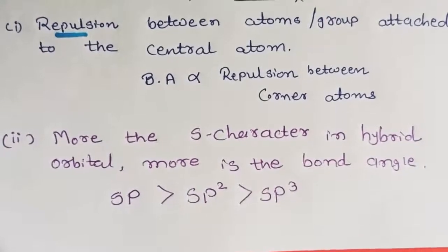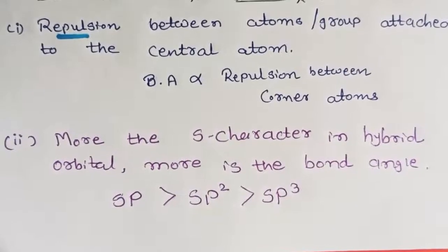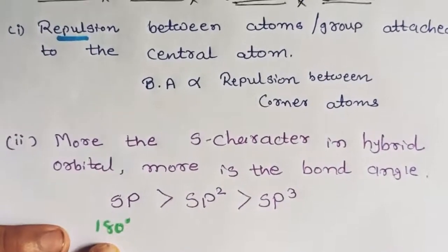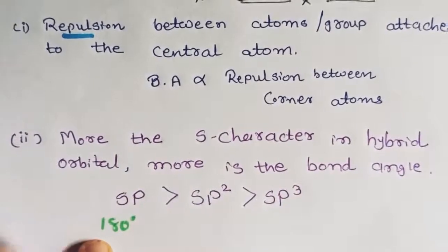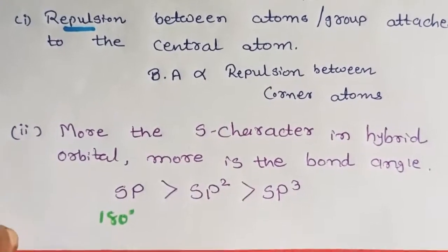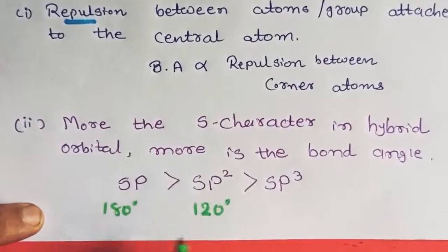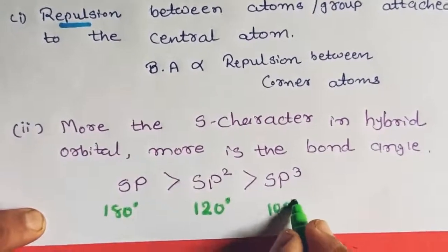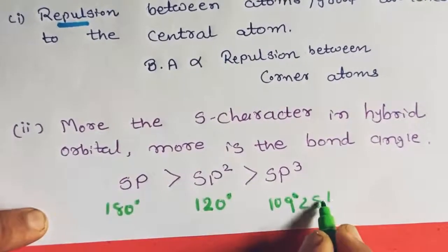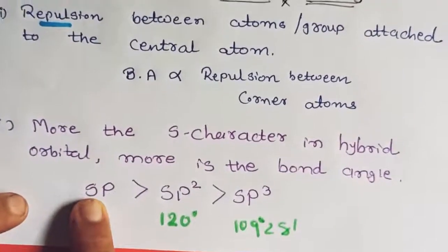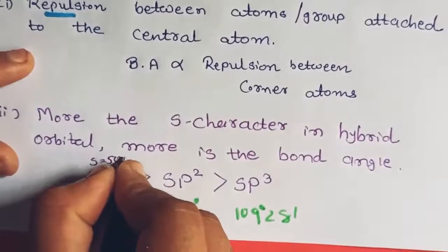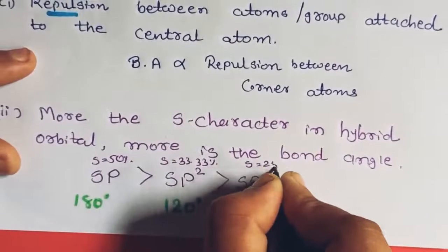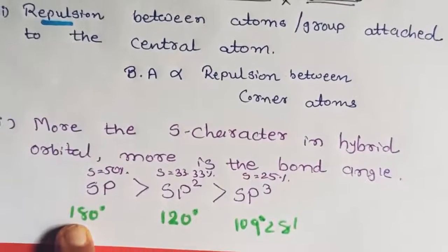Let's also see the values: for sp hybridization, bond angle is 180°. For sp2 hybridization, the bond angle is 120°. For sp3 hybridization, the bond angle is 109° 28'. The s-character in sp is 50%, in sp2 it is 33.33%, and in sp3 it is 25%. So as s-character increases, bond angle also increases.